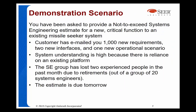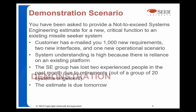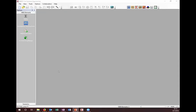For our demonstration, we'll use the following scenario: the customer has emailed a list of a thousand new requirements, two new interfaces, and one new operational scenario. Management wants a not-to-exceed systems engineering estimate by tomorrow. You know this is part of an existing system you are already providing to this customer, and you know that you have lost two experienced people in your group out of twenty due to attrition. Given this information, we can go into the tool, identify our key parameters, and build our estimate.